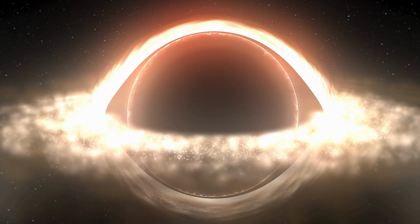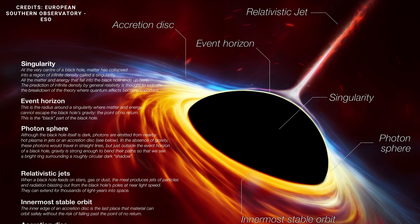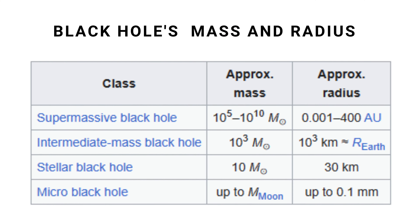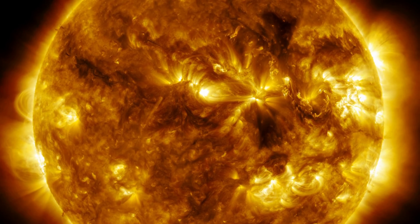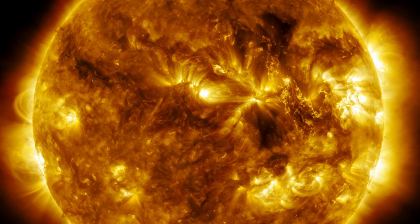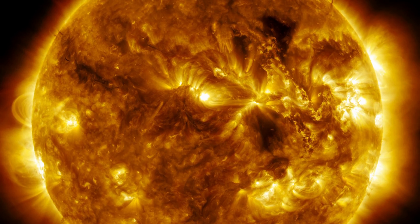One of the main features of a black hole is its event horizon, which is the boundary beyond which nothing can escape. The size of the event horizon depends on the mass of the black hole and is proportional to it. For example, a black hole with the mass of the sun would have an event horizon of about three kilometers, or 1.9 miles, in radius.